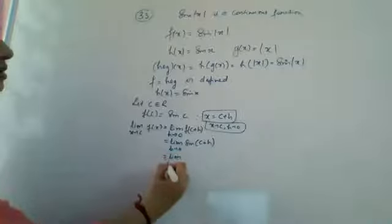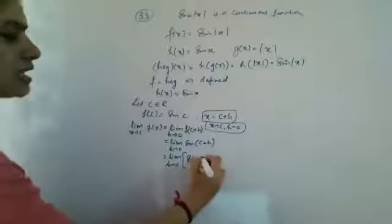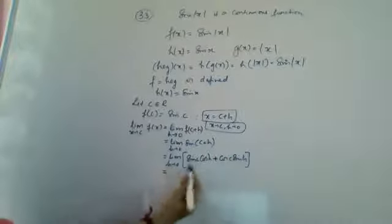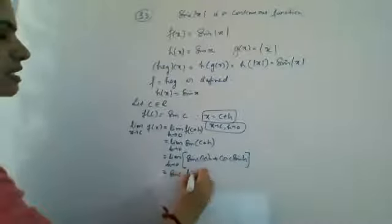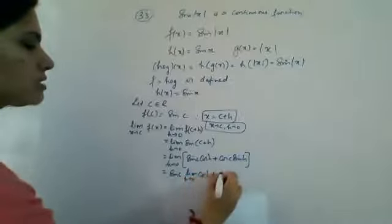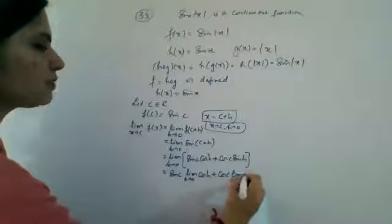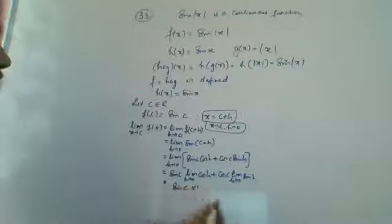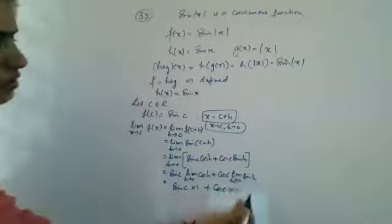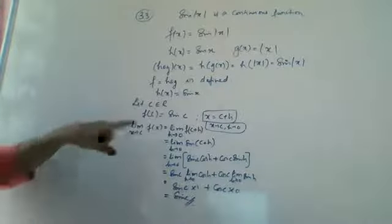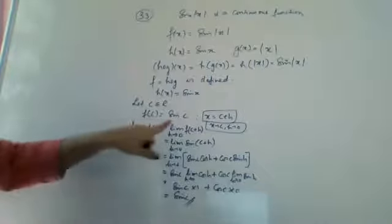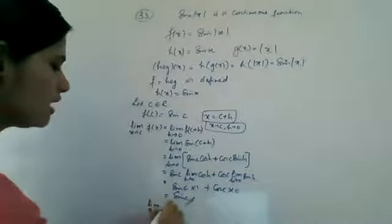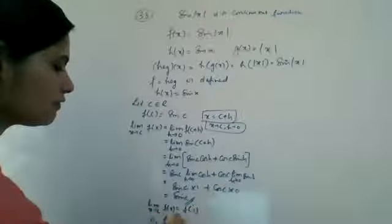Expanding: limit h tends to 0 of sin(c+h) equals limit h tends to 0 of sin c cos h plus cos c sin h. This equals sin c times limit h→0 of cos h, plus cos c times limit h→0 of sin h. The first limit gives cos 0 = 1, the second gives sin 0 = 0. So we get sin c into 1 plus cos c into 0, which equals sin c. Since the limit equals f of c, f is continuous.